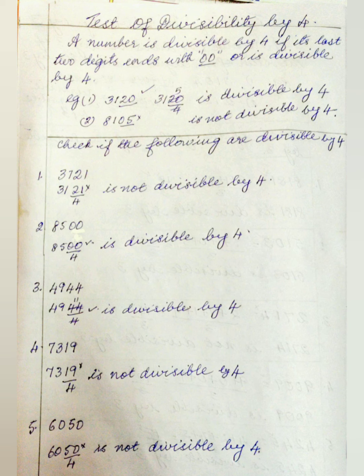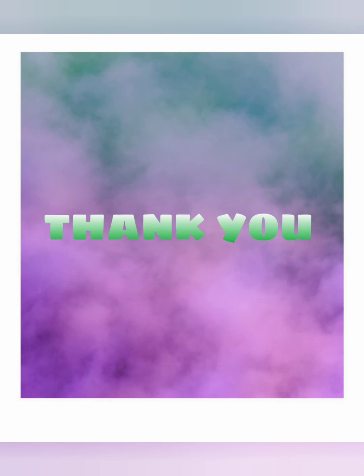7319: the last two digits are 19, and 19 is not divisible by 4, so 7319 is not divisible by 4. 6050: the last two digits are 50, and 50 is not divisible by 4 exactly, so 6050 is not divisible by 4.